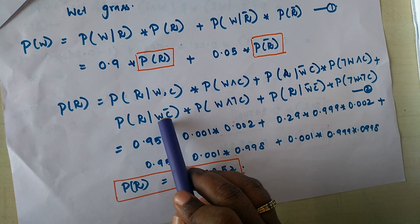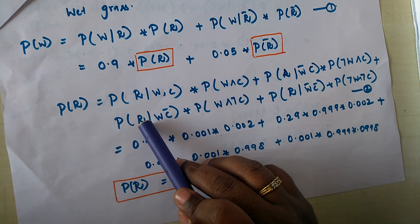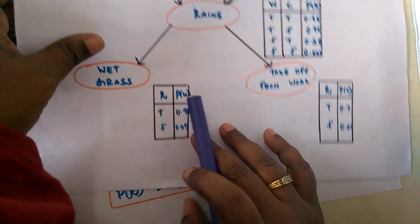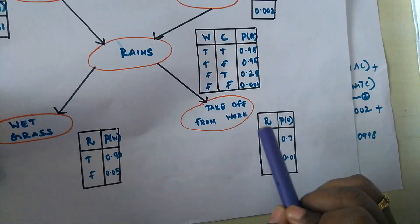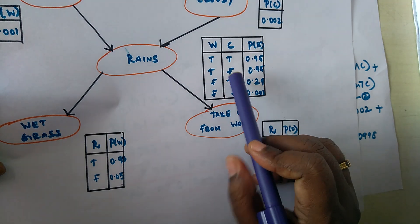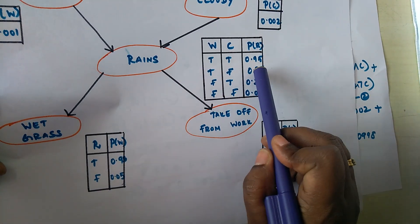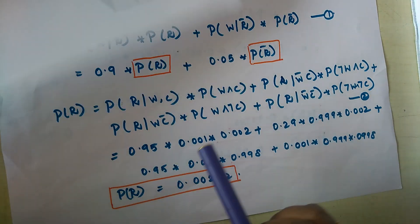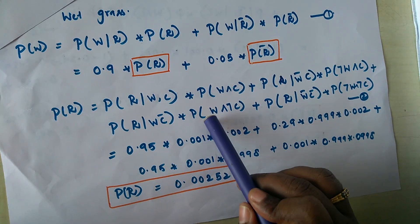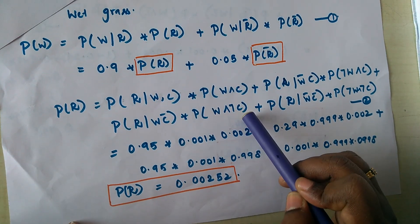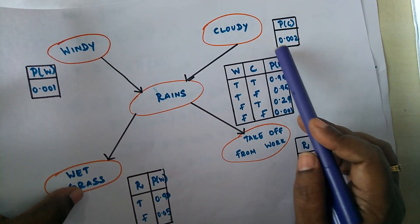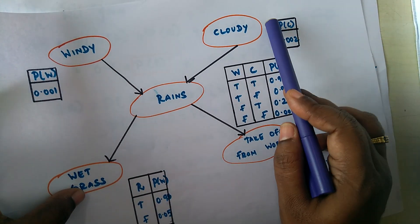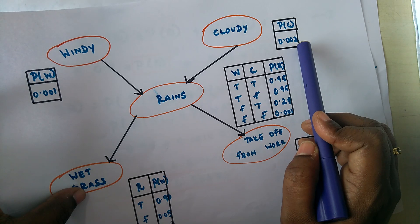For the third factor, given it is windy and not cloudy, the probability of rain is 0.95 — obtained from the conditional probability table when cloudy is false and wind is true. The joint probability of windy and not cloudy is: windy = 0.01, and not cloudy = 1 minus 0.002.